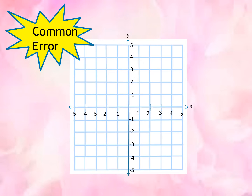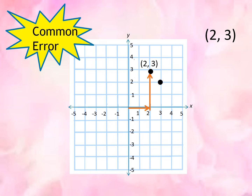So in plotting points, there is a common error. The common error is that students interchange the x and the y. When we plot (2, 3), some students plot it with the y coming first before the x. It should be wrong — the x comes first before the y.